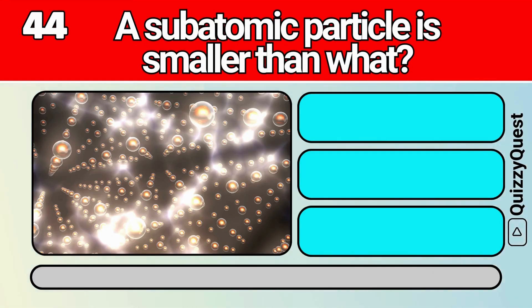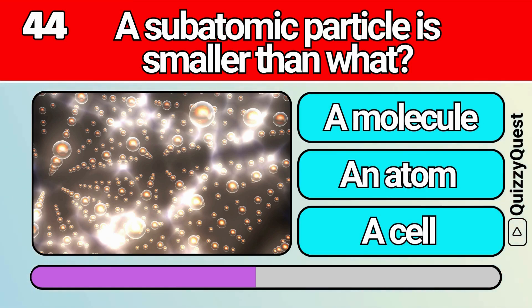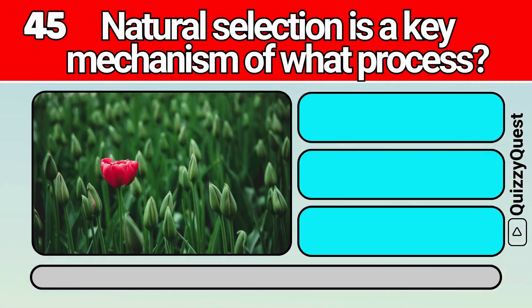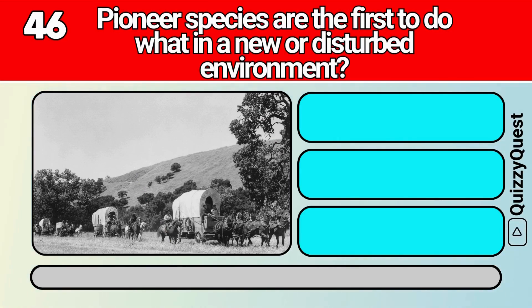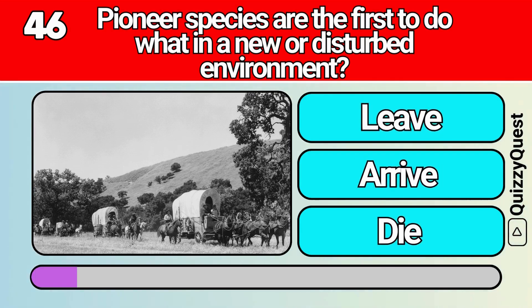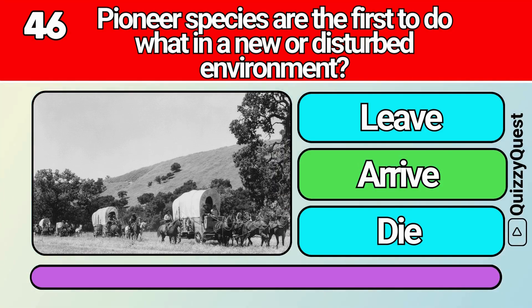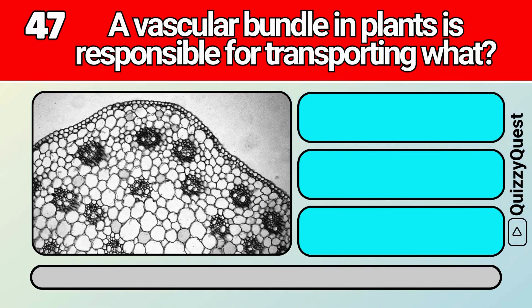A subatomic particle is smaller than what? Natural selection is a key mechanism of what process? Pioneer species are the first to do what in a new or disturbed environment? A vascular bundle in plants is responsible for transporting what?